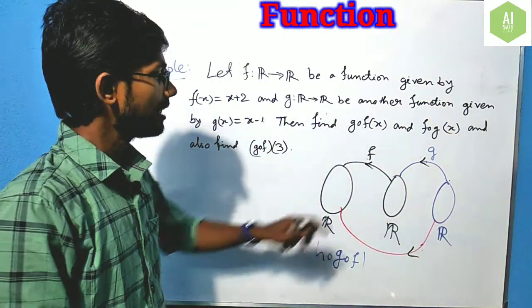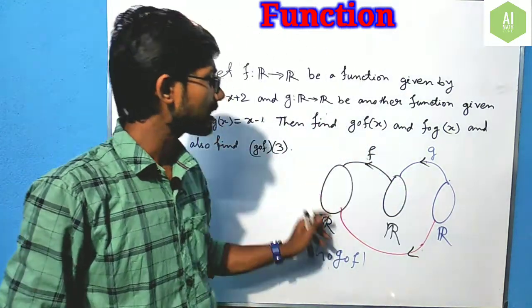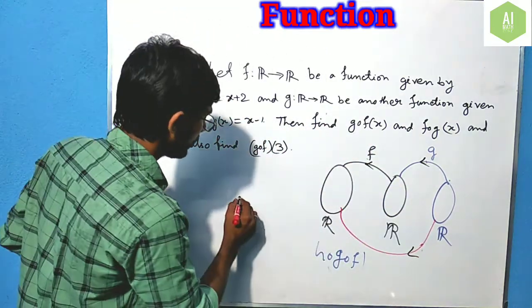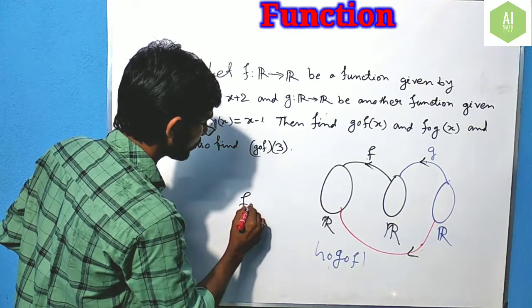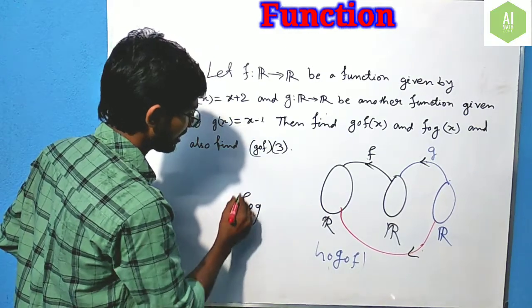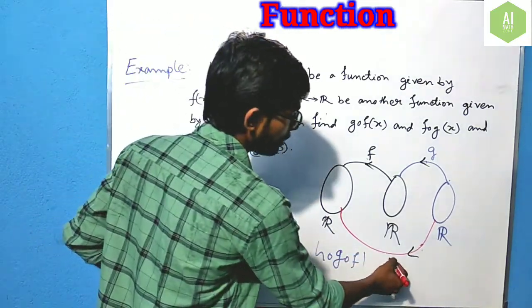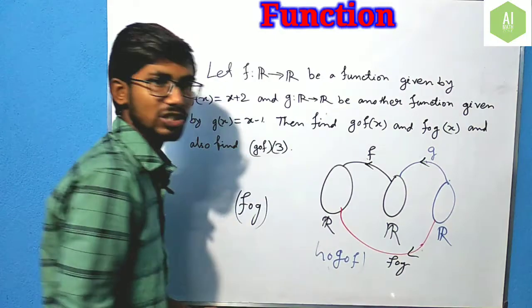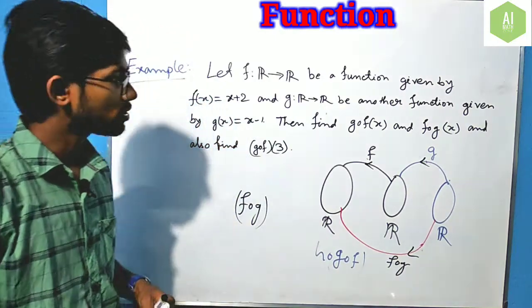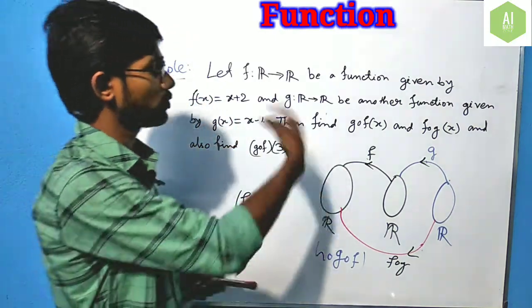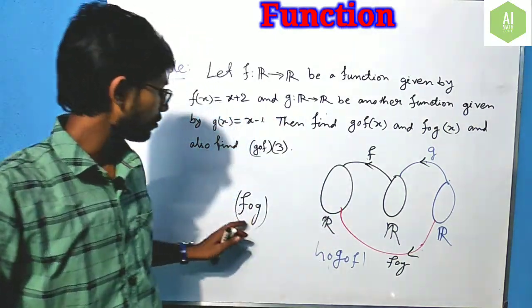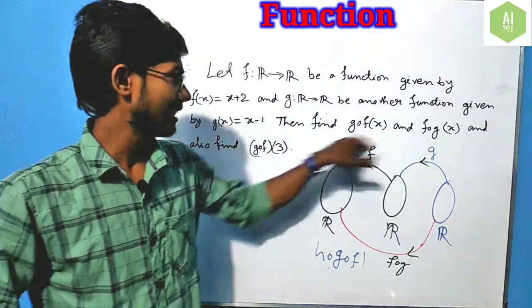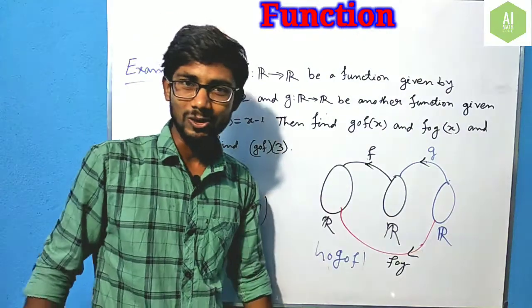When we write the composition in the other direction — g first, then f applied after — we write F compose G, and that is fog. So when the direction changes, it becomes fog. We need to find G compose F first.